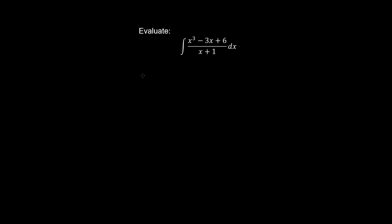Let's evaluate this integral. The degree of the polynomial in the numerator has a higher degree than the polynomial in the denominator, so we can use polynomial long division. Because we don't have an x squared term, we can just put 0x squared.